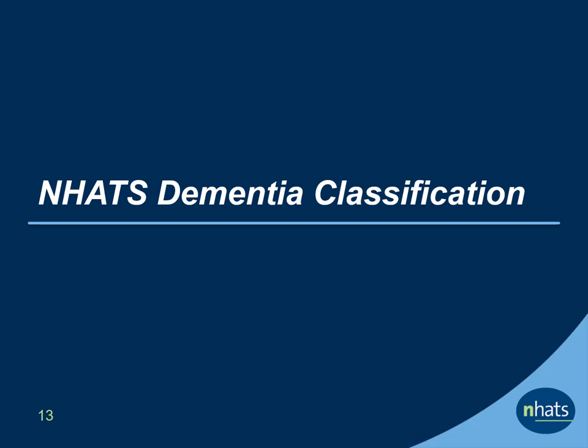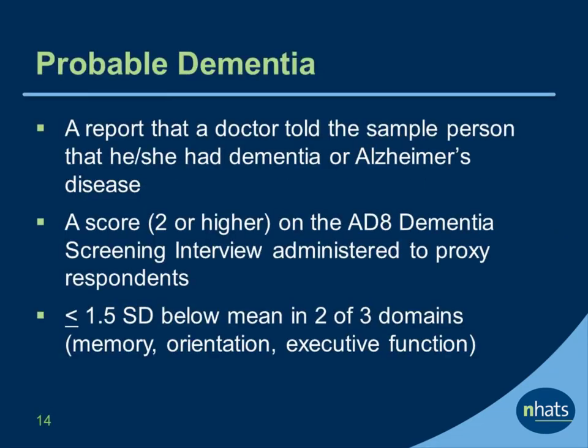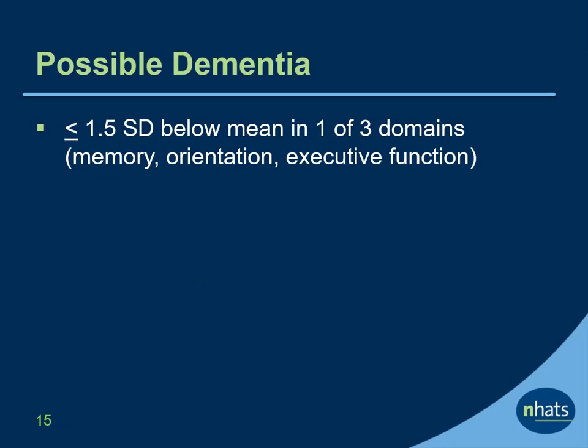Next, let's turn to the NHATS dementia classification. NHATS has developed a validated algorithm for classifying participants into three groups: those living with probable dementia, possible dementia, and no dementia. We classify the following groups as having probable dementia: first, a doctor told them they have dementia or Alzheimer's disease; second, a score of two or higher on the AD-8; third, a score at or below 1.5 standard deviations below the mean in two of three assessment domains measuring memory, orientation, and executive function. We classify individuals as having possible dementia if they have a score at or below 1.5 standard deviations below the mean in one of three domains, including memory, orientation, and executive function.